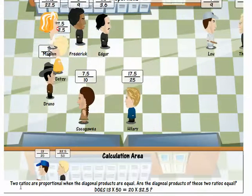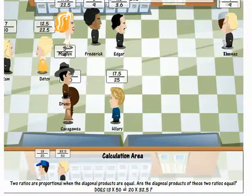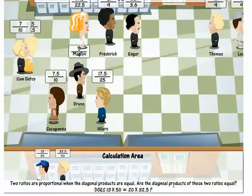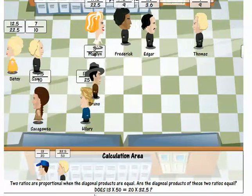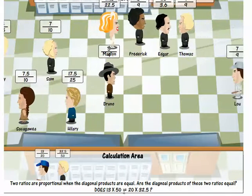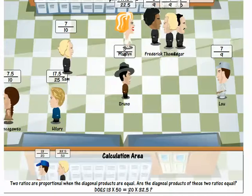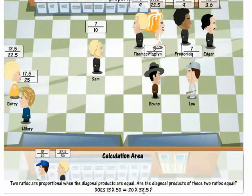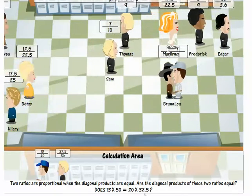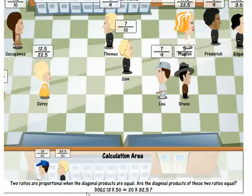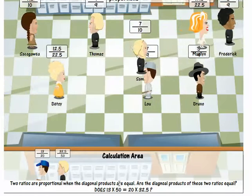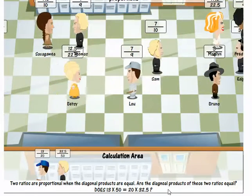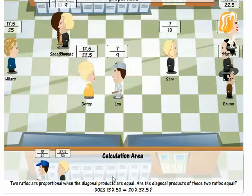Two ratios are proportional when the diagonal products are equal. Are the diagonal products of these two ratios equal? Does 13 times 50 equal 20 times 32.5? My guess is that these two do. So you have to still make the calculations but it gives you the formula when you drag two of the students into the calculation area.